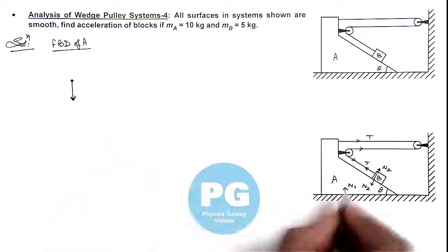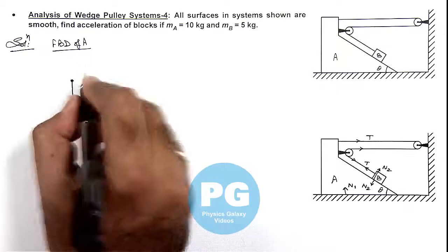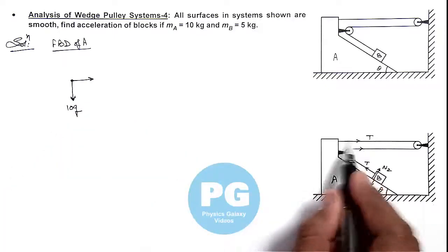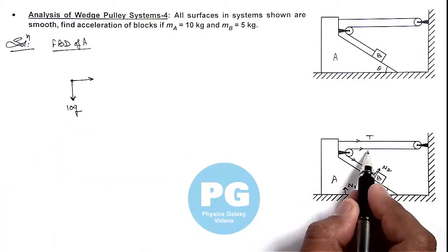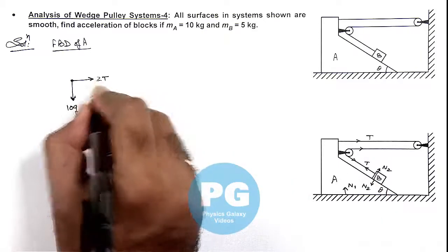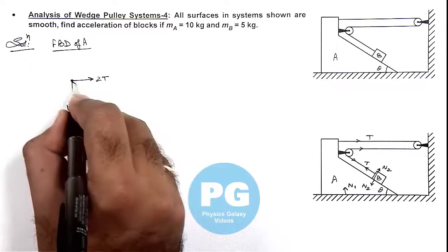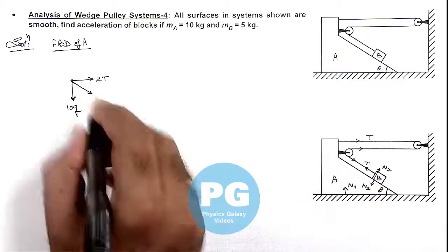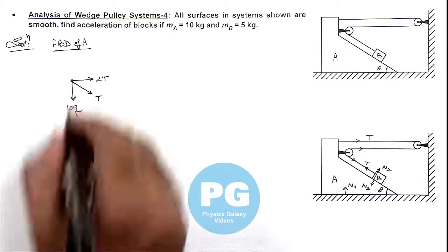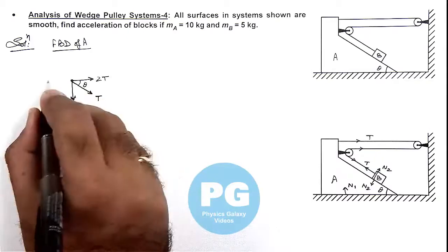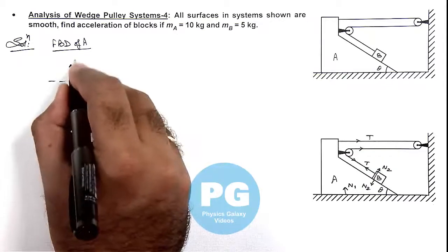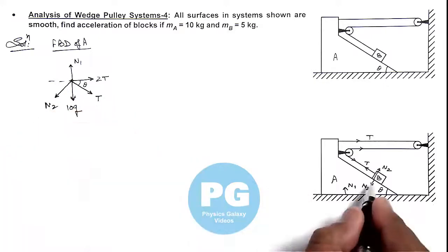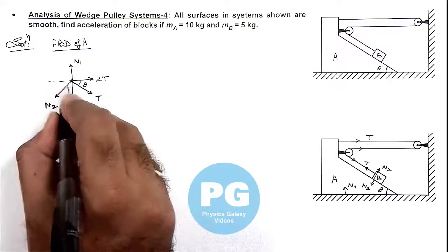If we draw the free body diagram of A, then we can see it'll experience weight in downward direction, that is 10g. Toward right, it'll experience a force 2T, and in the direction along the incline due to this tension, it'll experience another force T which is acting at an angle theta with the horizontal. N1 normal reaction is acting on it in upward direction and N2 normal reaction is acting in the direction normal to the incline at this angle theta.